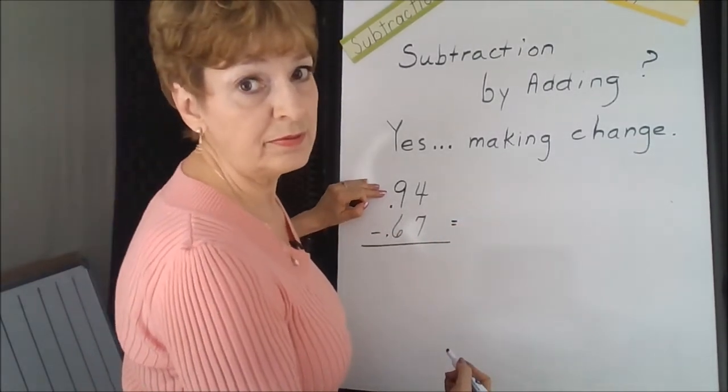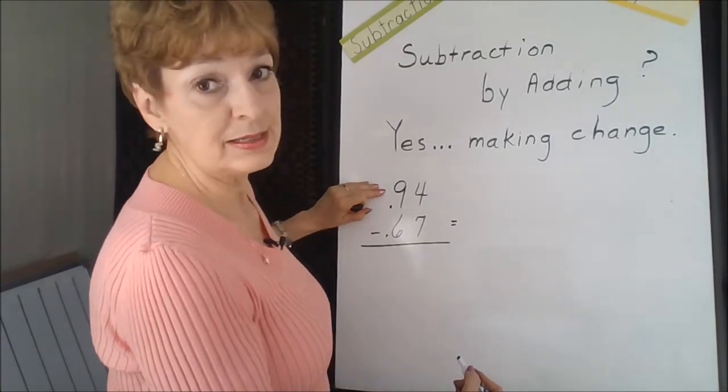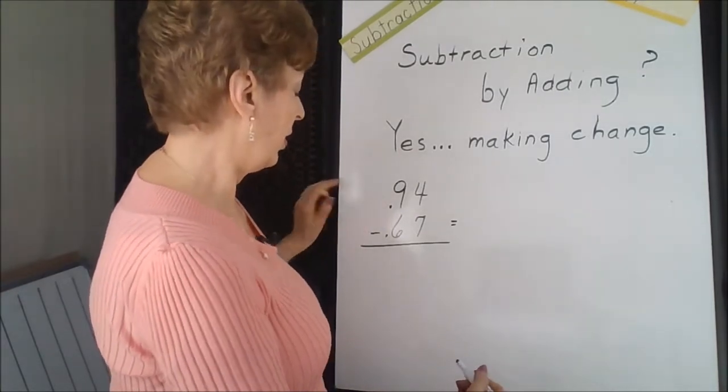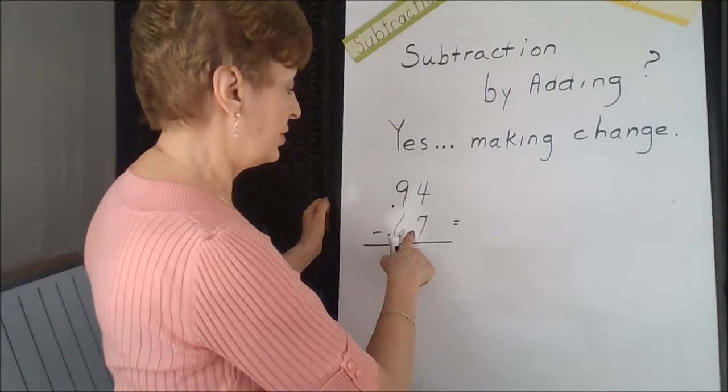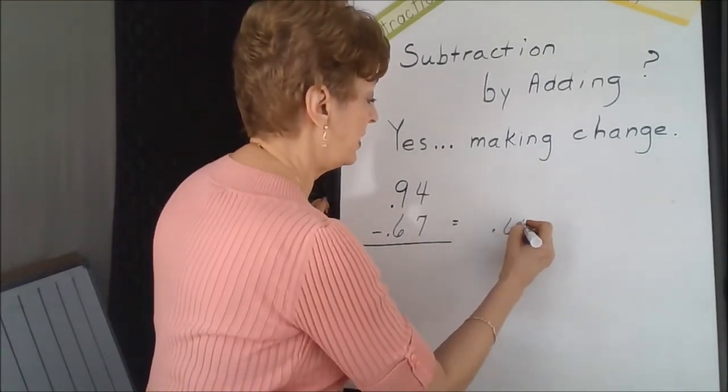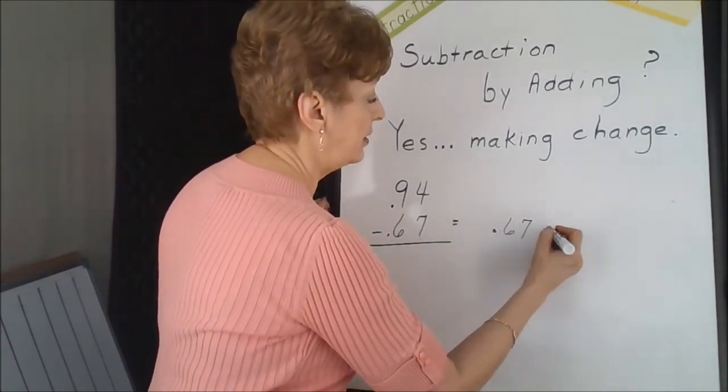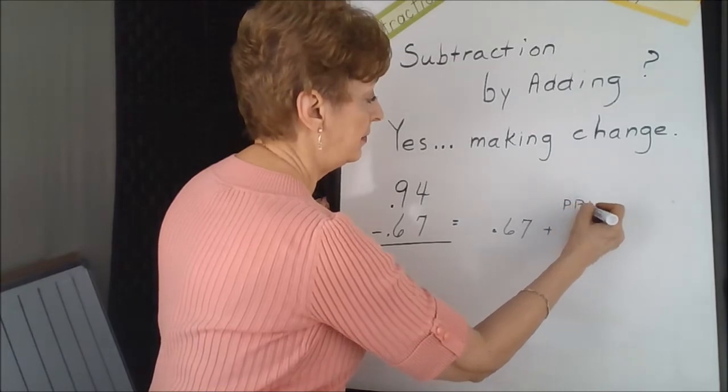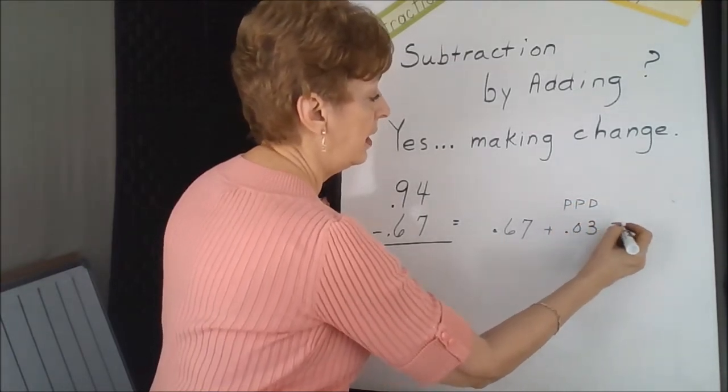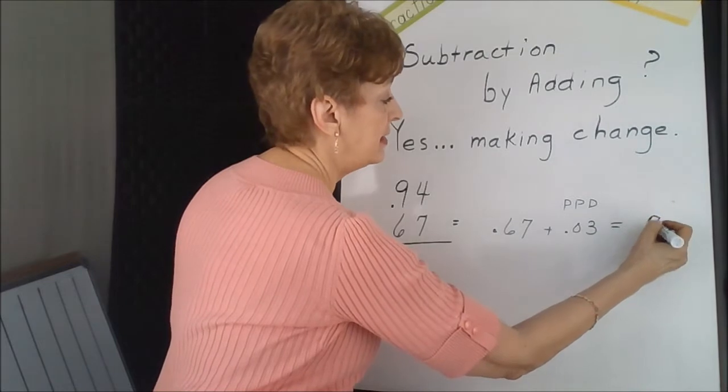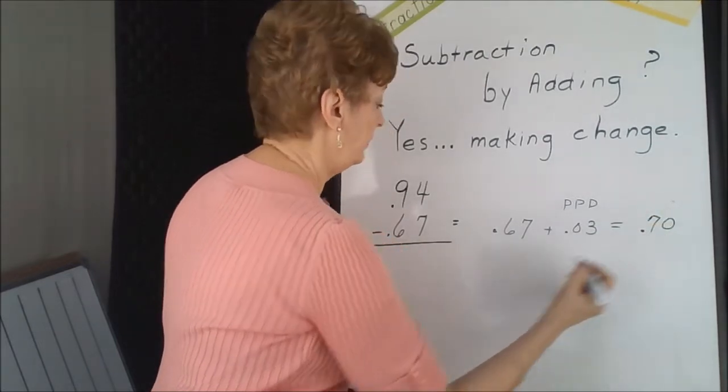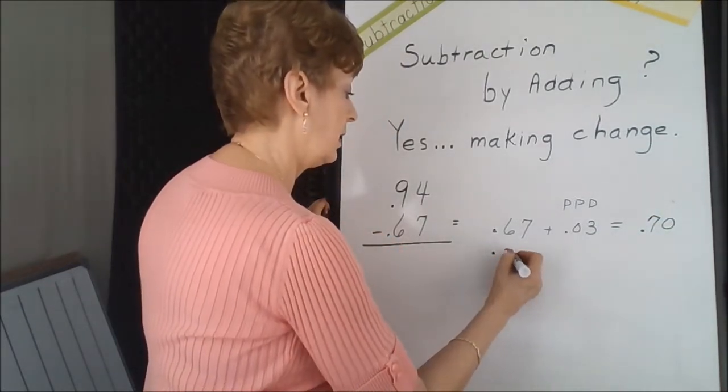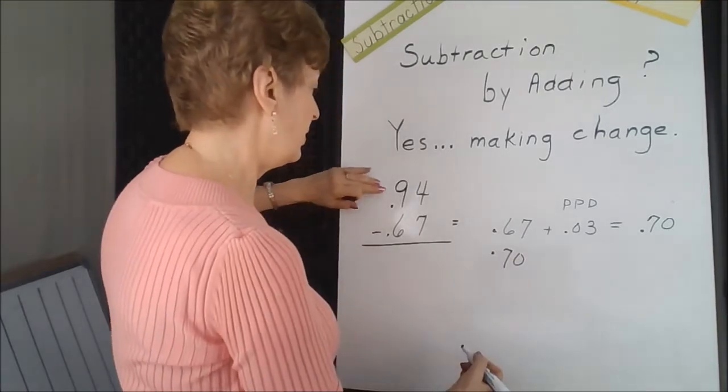When there's regrouping involved in it, it's probably easier to get to the zeroed number. So if I were to take my 67 cents and add three pennies to it, I would get 70 cents. That brings me closer to the 94.